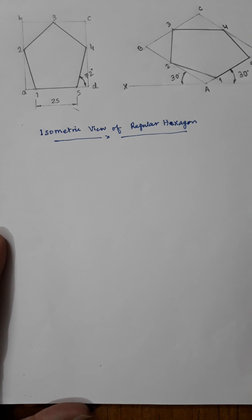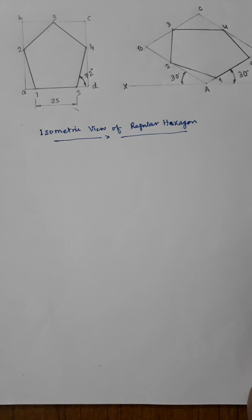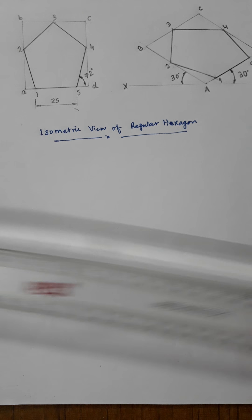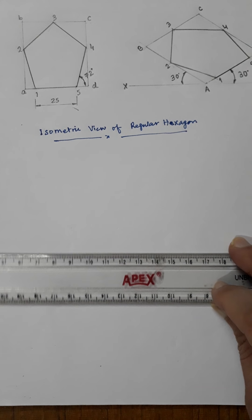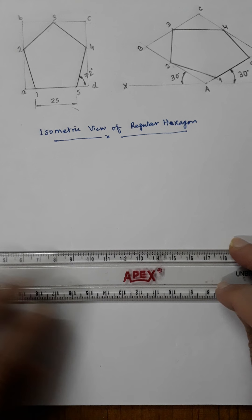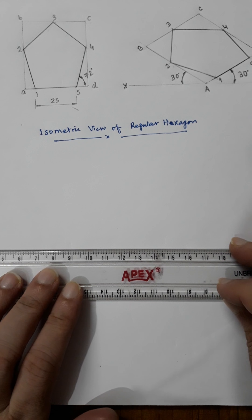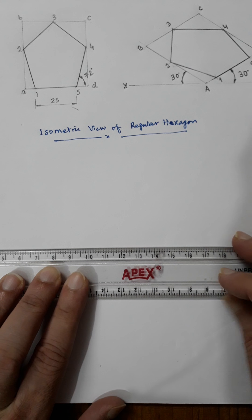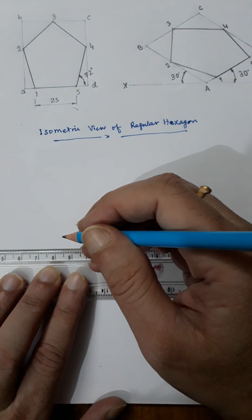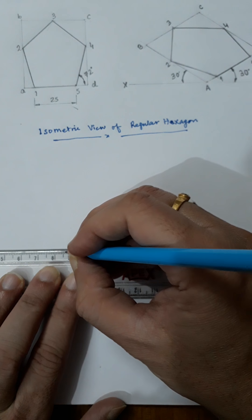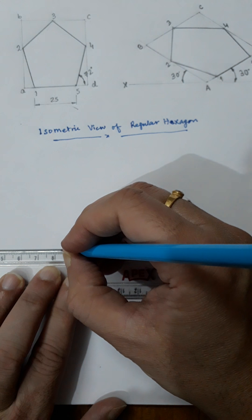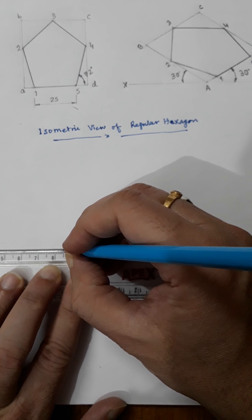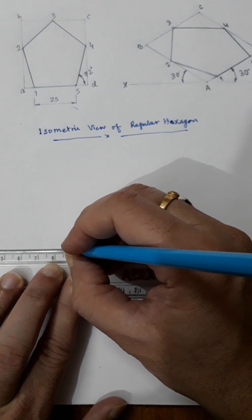Hello students. In this video I will discuss how to draw the isometric view of the regular hexagon. Regular means all the sides of the hexagon are equal and the included angle is 120 degrees.